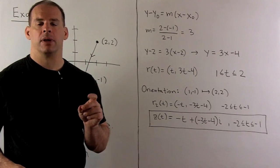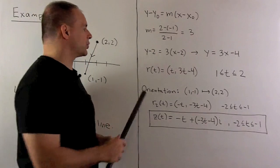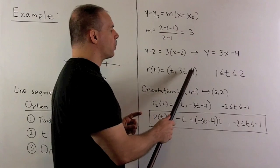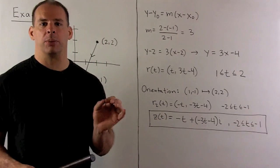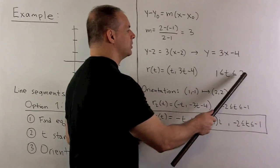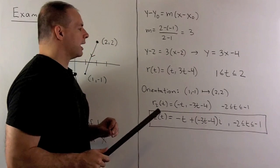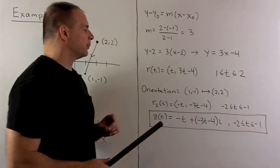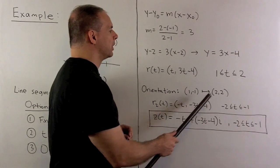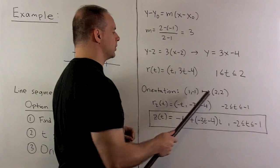So, if I want to parametrize, I'm just going to let t stand in for x. So, I have r of t equals t comma 3t minus 4. Then, we just got to worry about the endpoints, but they're just going to be the x values. So, we're going to go from 1 to 2. Now, if we check the orientation, we're going to be going from the point 1 minus 1. If you put 1 in here, that checks out. Put 2 in here, we get 2 comma 2.